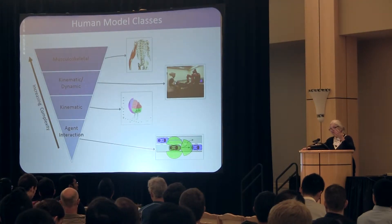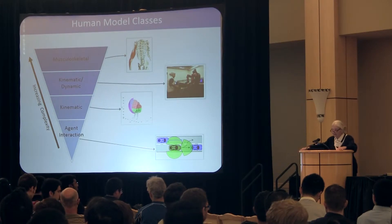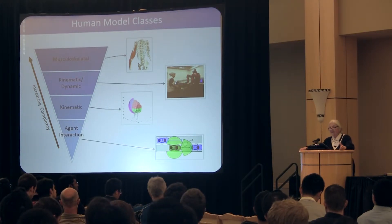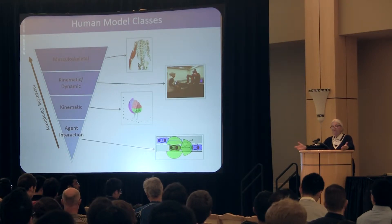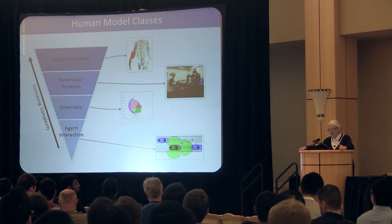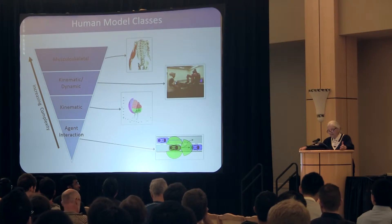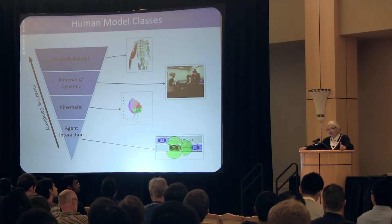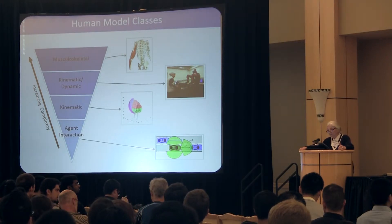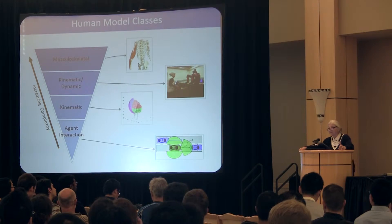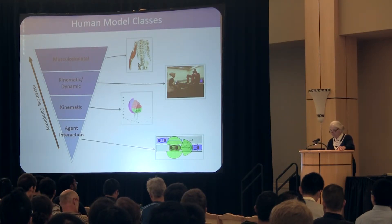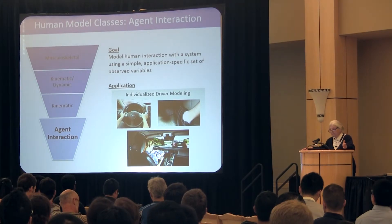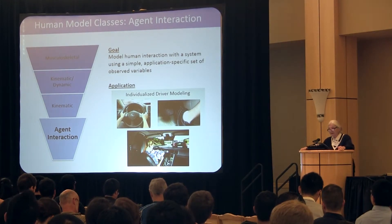So here is our vision. We go from musculoskeletal modeling to kinematic dynamics, kinematics, and agent interaction. Would you believe that a lot of robotic technologies are extremely useful, even if you just stay on kinematic modeling? So here is one of the human models we are looking at.